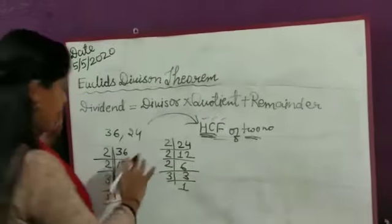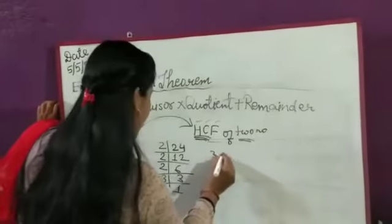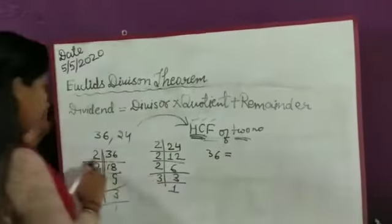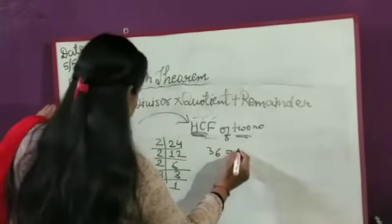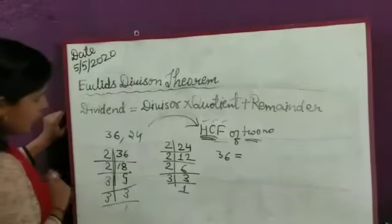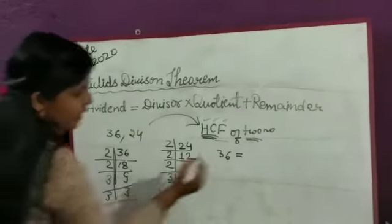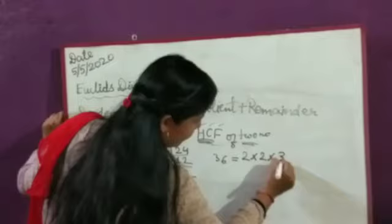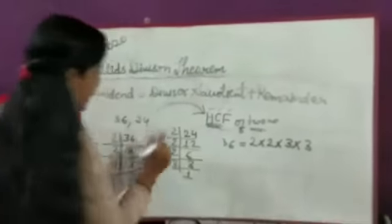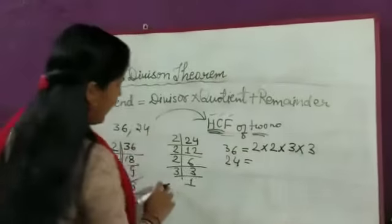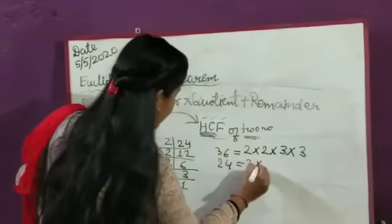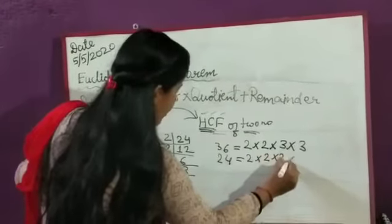Now we have the factors. The prime factorization of 36 is 2 × 2 × 3 × 3. 2 × 2 = 4, 4 × 3 = 12, 12 × 3 = 36. The second number is 24. Prime factorization of 24 is 2 × 2 × 2 × 3. Now we have to find out the common factors.